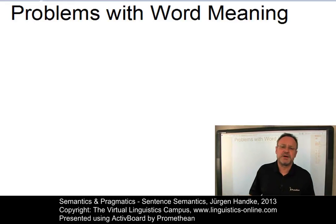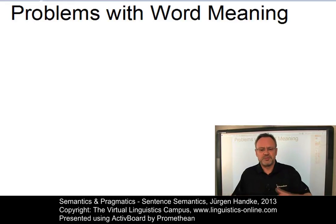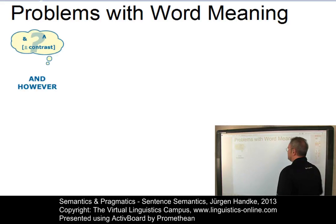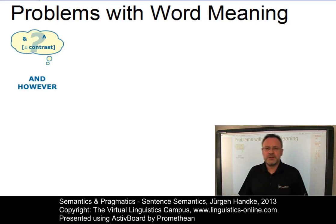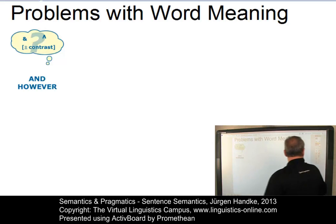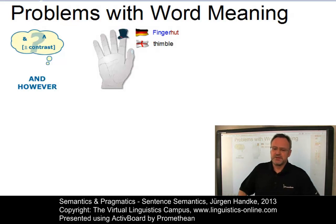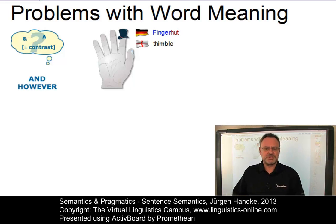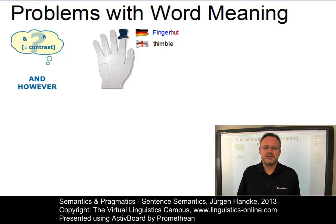Over and above the non-semantic problems of word definition, there are many difficulties in defining word meaning. For example, the problem of handling function words. How can we specify the meaning of items such as AND or HOWEVER? Or we face cross-linguistic problems where, across languages, the same concept may involve different degrees of transparency, such as 'thimble' in English and 'fingerhut', literally meaning 'finger hat' in German.